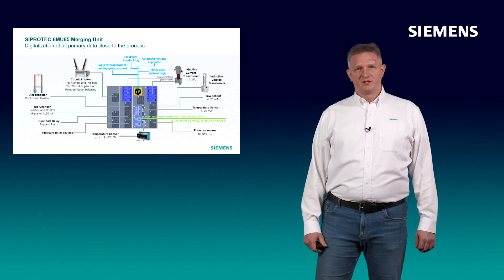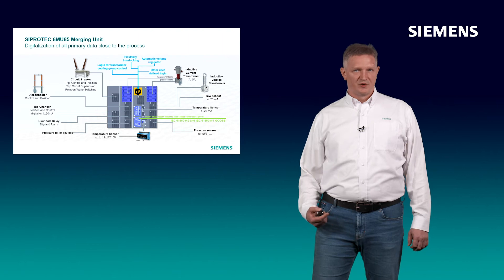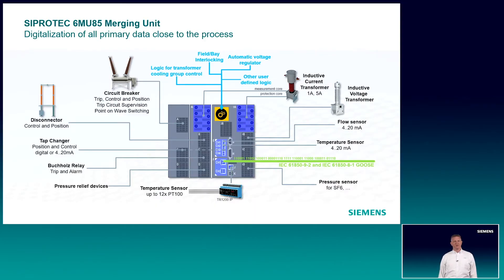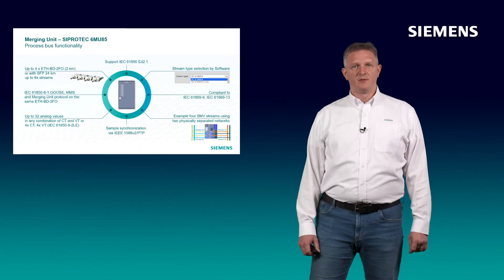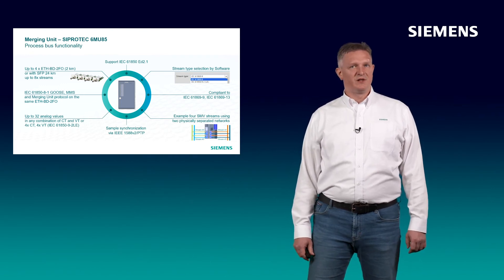Let's have a closer look at the merging unit. The merging unit provides the interface to various primary equipment, like switching devices, temperature sensors, tap changers, Buchholz relay, flow sensors, and so on. You can realize user logic for field and bay interlocking, transformer cooling control, apply an automatic voltage regulator, and so on. Up to four Ethernet interfaces provide the capability of up to eight streams — two per each Ethernet interface — and each interface can publish up to 32 analog values per single stream, with flexible allocation of currents and voltages to publish, all in accordance with IEC 61869-9. Sample synchronization is realized via IEEE 1588 PTP, or for retrofit scenarios, also PPS by IRIG-B would be possible.